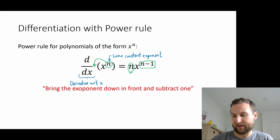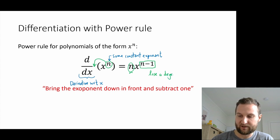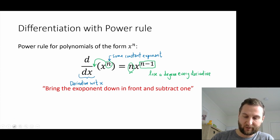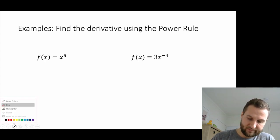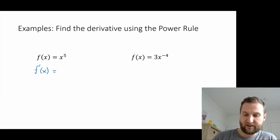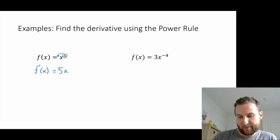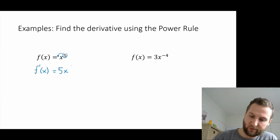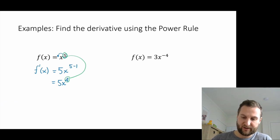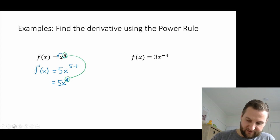The new exponent tells us we lose a degree every time we differentiate. So if you started with y equals x cubed, the derivative will be a quadratic or x squared function. For example, f(x) equals x to the power 5: the derivative is 5 times x to the power 5 minus 1, which simplifies to 5x to the power 4. The degree went from 5 down to 4.